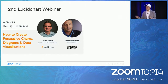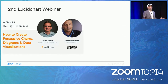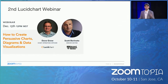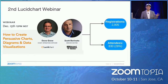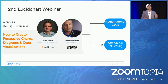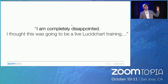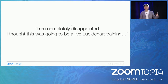The results were better — about 2,900 registrations and around 1,830 attendees, a 28% attendance rate. Still, I knew we could do better based on how many people were using our product. We looked at the feedback, and someone in a post-webinar email survey or in the chat said: 'I'm completely disappointed — I thought this was going to be a live Lucidchart training.'